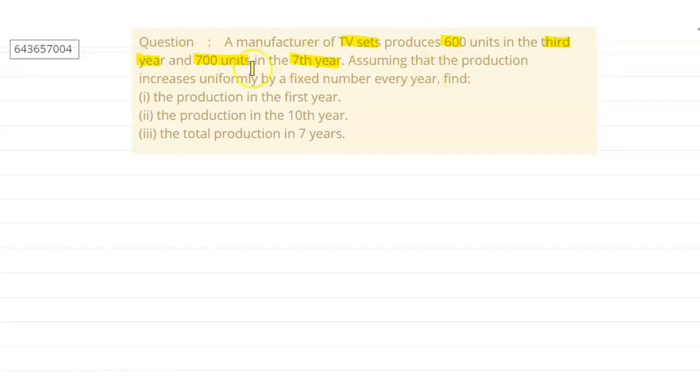Assuming that the production increases uniformly by a fixed number every year, find the production in the first year. Second part is the production in the 10th year, the total production in seven years. So let's start the question.